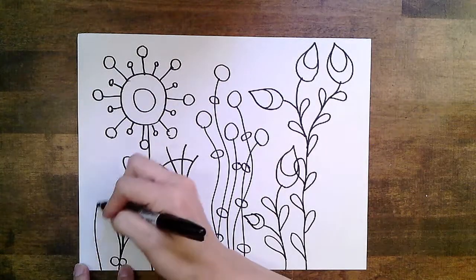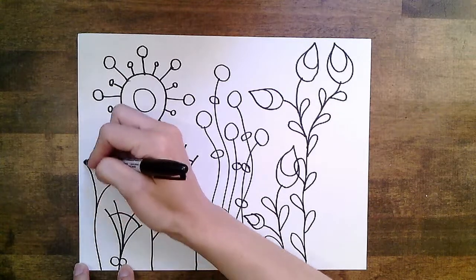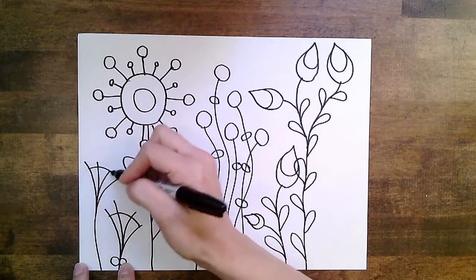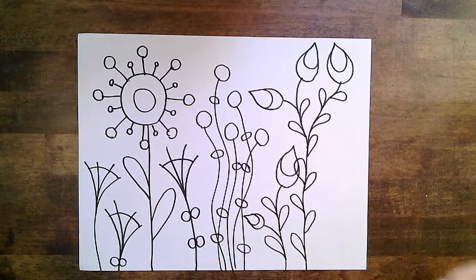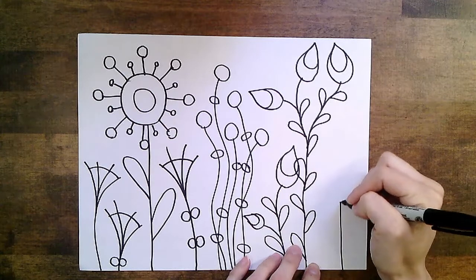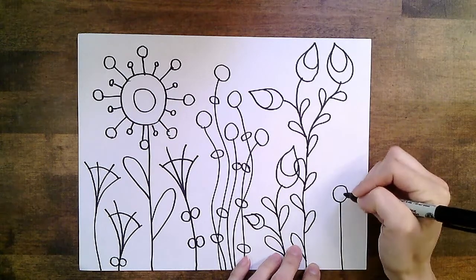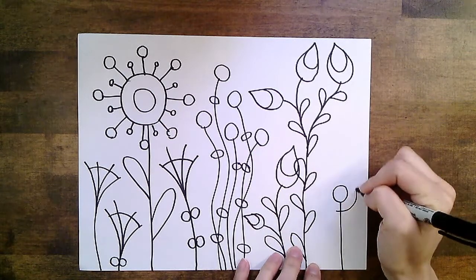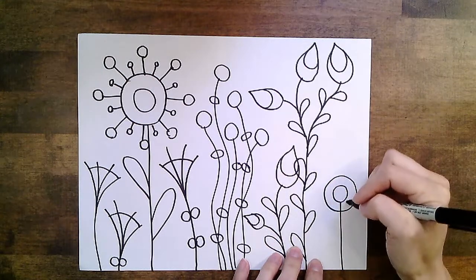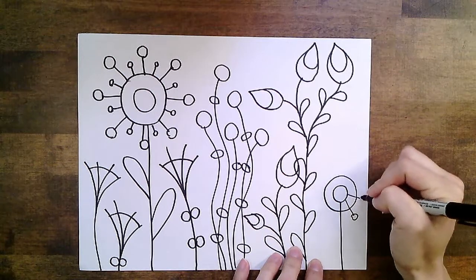One last flower over on the left side to fill that empty space. I need something over on that right side. Maybe I'll copy that first flower I did. Started with, let's see, a stem. A little circle. Then a bigger circle. And then those lines coming off with the circles on the end.